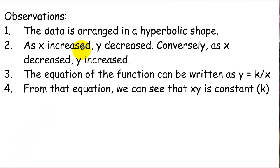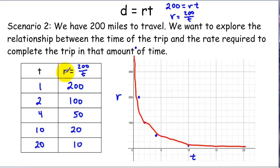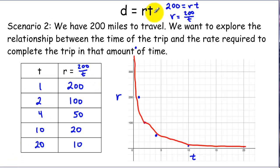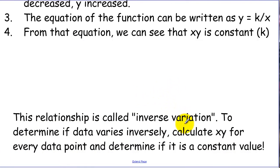So what we've observed in this scenario is that the scatter plot has a hyperbolic shape with horizontal and vertical asymptotes. As x or t increased, the rate decreased — they go in opposite directions. The equation can be written as y equals a constant over x, and when the two variables are multiplied together they equal a constant. This type of relationship is called an inverse variation. To check data for inverse variation, calculate x times y — if it equals a constant, it's an inverse variation.